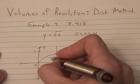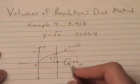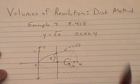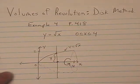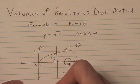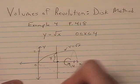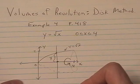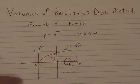With the coordinates that we've drawn here, that distance turns out to be y. So our radius is y. And we know that y equals the square root of x. Therefore, r of x, our radius function, is the square root of x.